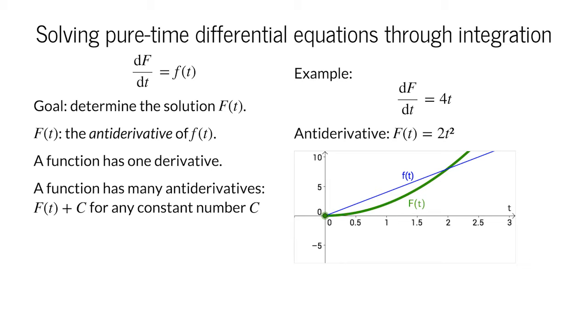Hence we really have a set of antiderivatives, capital F of t plus c, where c is an arbitrary constant. On our plot, we can move the graph of the antiderivative up or down, and it is still the antiderivative of 4t. Notice how moving the antiderivative up and down corresponds to adding a different number to the antiderivative 2t squared.